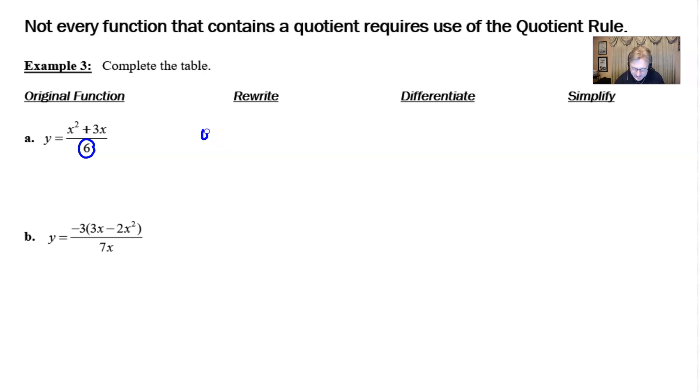So for the rewrite, you might want to call this y equals x squared over six. There's nothing wrong with that, or you could call it one-sixth x squared. Maybe that would be the easiest way to write it so that we're ready to take the derivative. And then we would add, and then three x over six could be reworked as three over six times x. Now we have this in that very popular coefficient variable power form so that we can take the derivative.